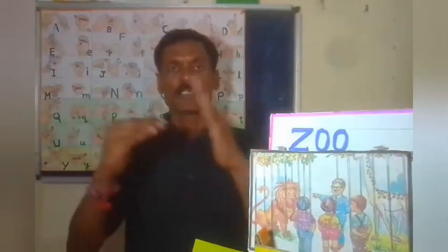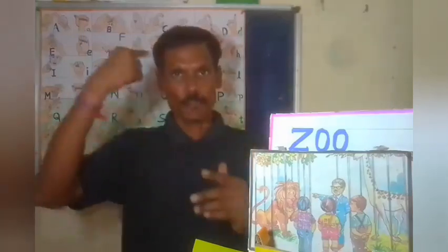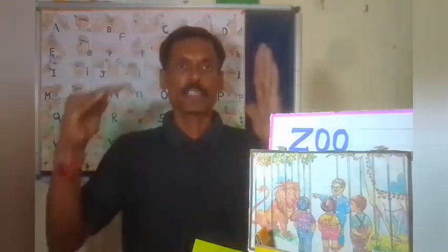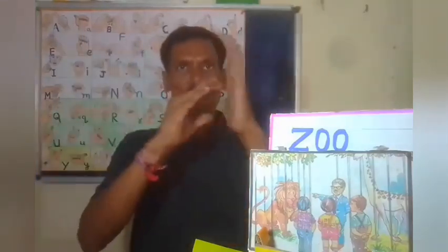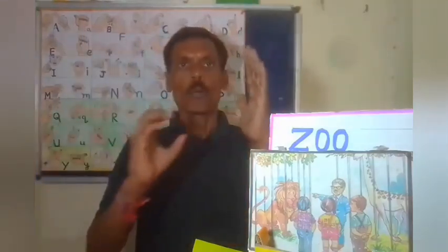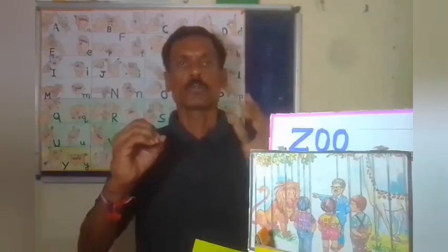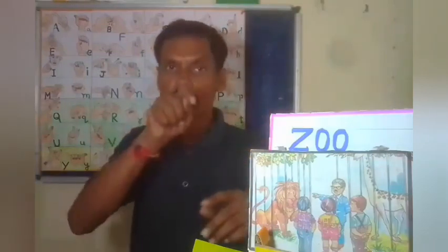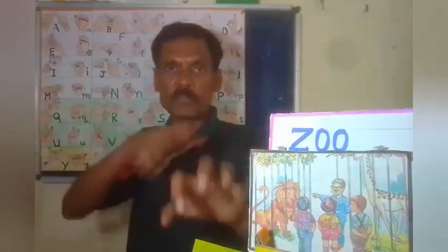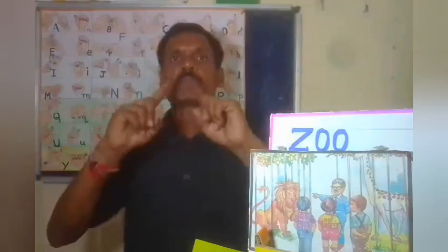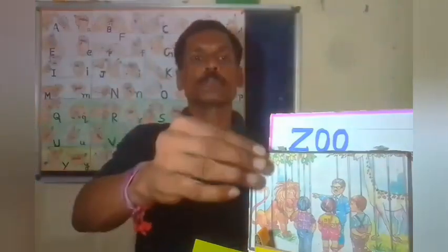Z — Z for Zoo. Spelling: Z, O, O — Zoo. Zebra.